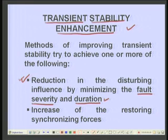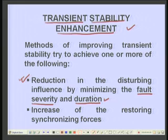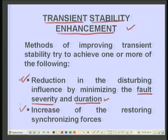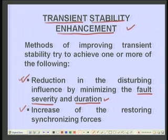There are two aspects: fault severity and its duration. Over the years, many efforts have been made to reduce fault severity and duration. The second approach is the increase of restoring synchronizing forces. When the system is subjected to a disturbance, it must be restored to the initial or new operating condition, requiring synchronizing forces. Both reduction of disturbing influence and increase of restoring synchronizing forces are fundamental approaches.